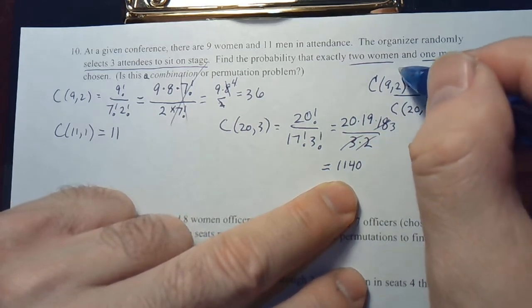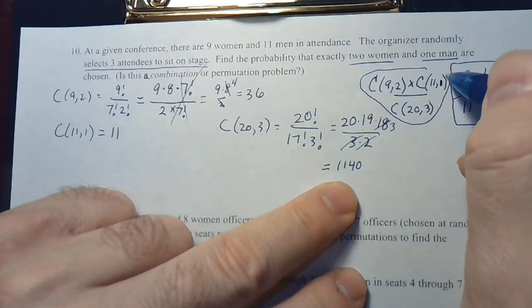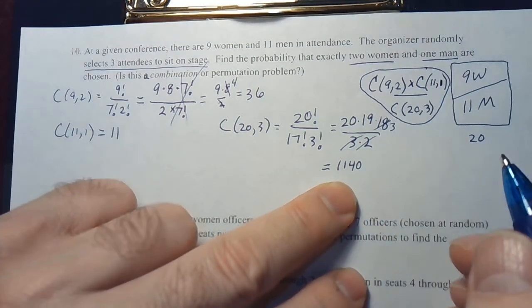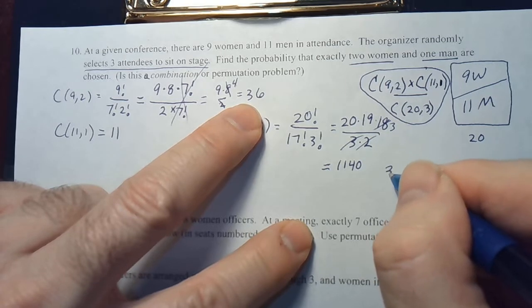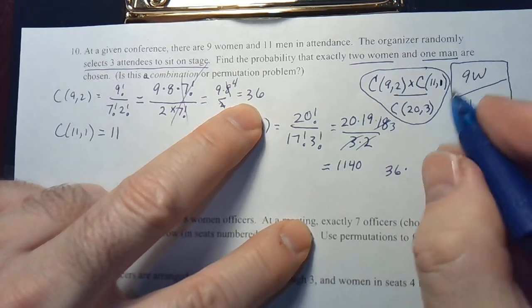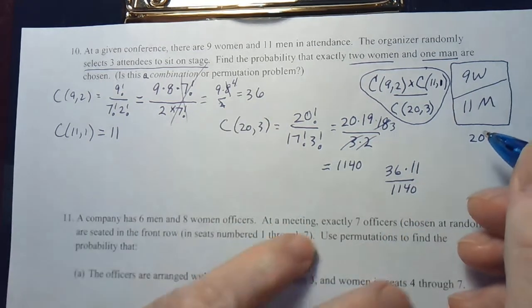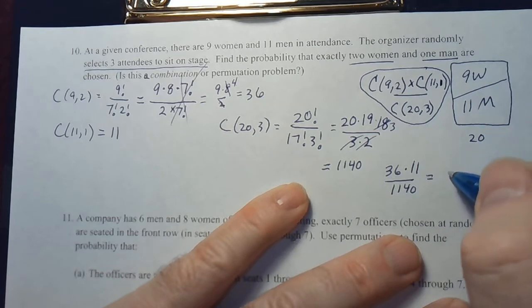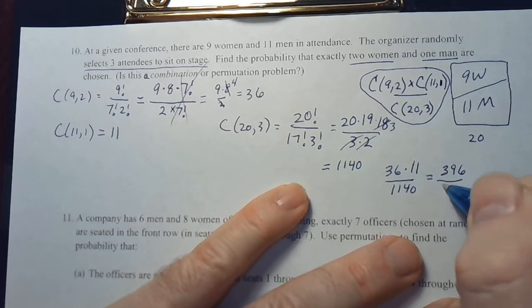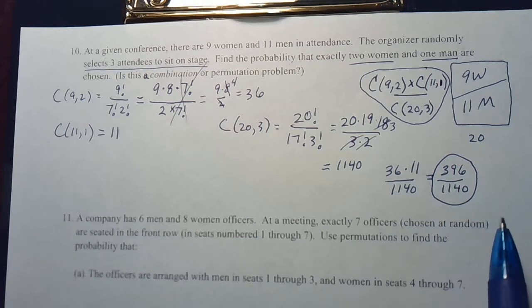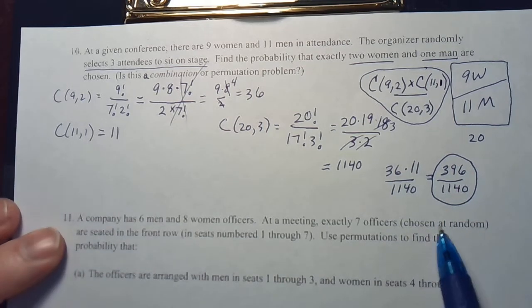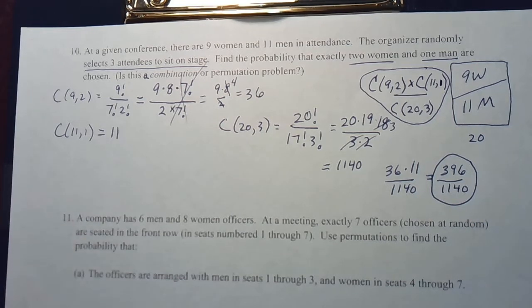So our final answer is: 9 choose 2, which is 36, times 11 choose 1, which is 11, over 1140. And 36 times 11 is 396, over 1140. They're both even, so you could divide both by 2. That's less than 40% — the probability of choosing exactly two women and one man.